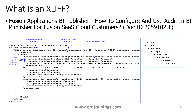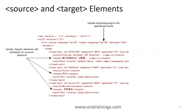Using this XLIFF file format, Oracle performs translation. Whenever you want to do any translation you have to consider these particular elements and change the information accordingly. The source language is generally English, then you specify the target language. For the target language you have to mention the language code as well as the country code. Under the body section you have a source element and a target element — for example, English text and its Chinese equivalent.